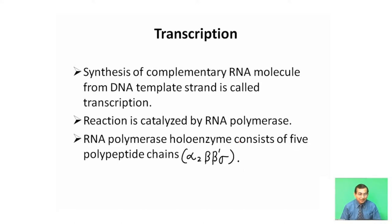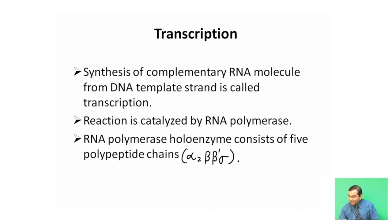RNA polymerase holoenzyme consists of five subunits: alpha 2, beta, beta prime, and sigma.